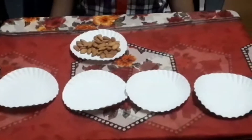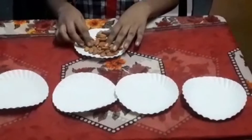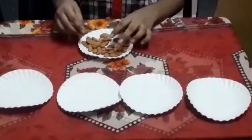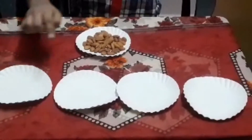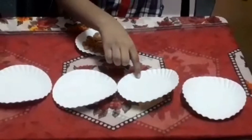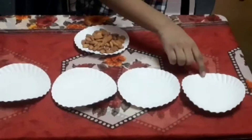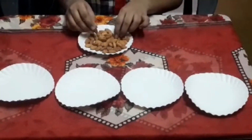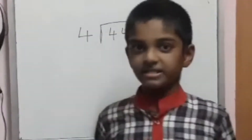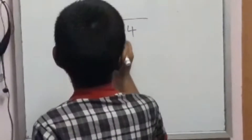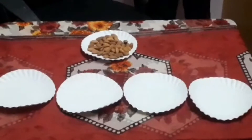Thank you. Today I have 44 buttons. I have to share. This is me, this is my brother, this is my mother, this is my father. I am going to share and divide. 4 elevens are 44. So I share 11 buttons. Each member got 11 buttons.